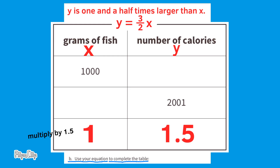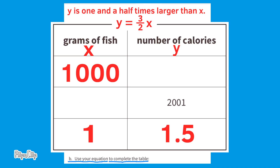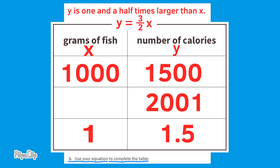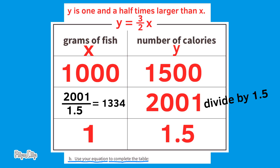For 1,000 grams of fish: 1.5 times 1,000 is 1,500. So 1,000 grams of fish has 1,500 calories. The last entry starts with calories, so instead of multiplying by 1.5, we divide by 1.5. 2,001 calories divided by 1.5 equals 1,334 grams of fish. So 1,334 grams of fish has 2,001 calories.